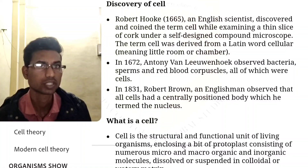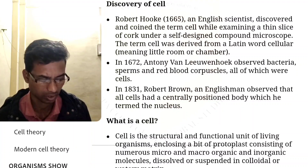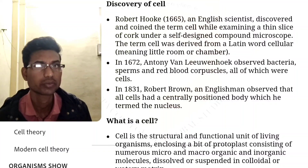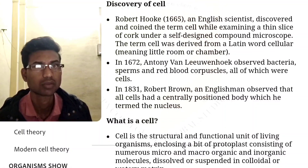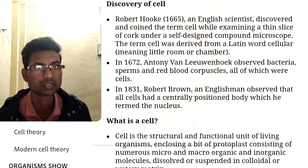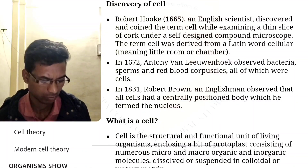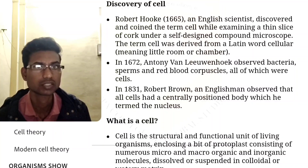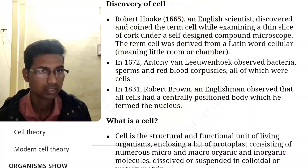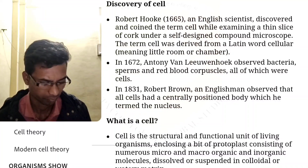He observed bacteria, spores, and red blood corpuscles, all of which were cells. In 1831, Robert Brown, an Englishman, observed that plants had a centrally positioned body which he termed the nucleus.